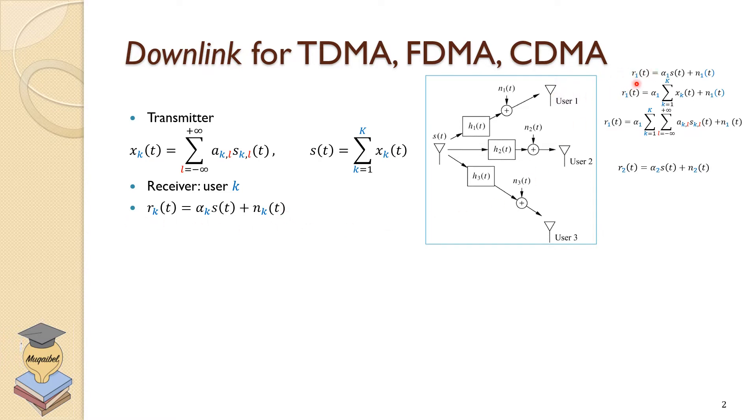At the receiver side we have the following form. For the first user we have R1 the received signal, alpha 1 and noise for the channel. We can replace S with its equivalent X for all users and also replace X with its equivalent sequence of symbols. We end up with two summations.